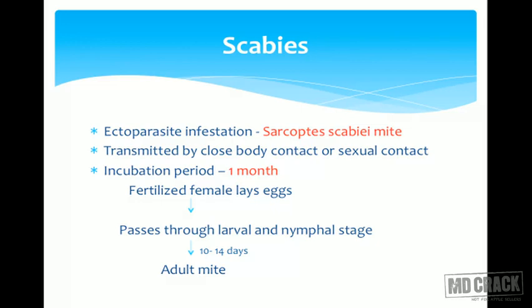However, on subsequent re-exposure, the patient may manifest the symptoms earlier than this. Now let's discuss the life cycle. A fertilized female lays eggs and it passes through the larval and the nymphal stage, and in around 10 to 14 days time, the adult mite is formed.